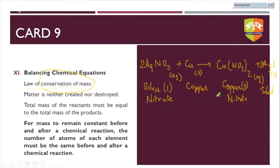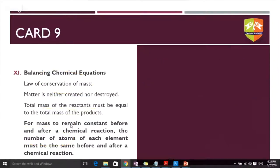Matter cannot be created or destroyed, so the number of atoms on both sides must be conserved. A few rules follow for balancing chemical reactions: the mass of reactants and products must be equal, which is why we balance chemical equations. For mass to remain constant before and after the reaction, the number of atoms must remain constant, since mass is proportional to the quantity of atoms.